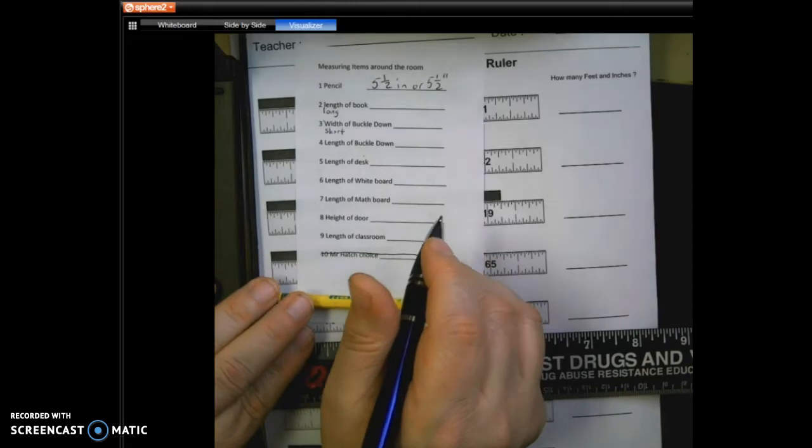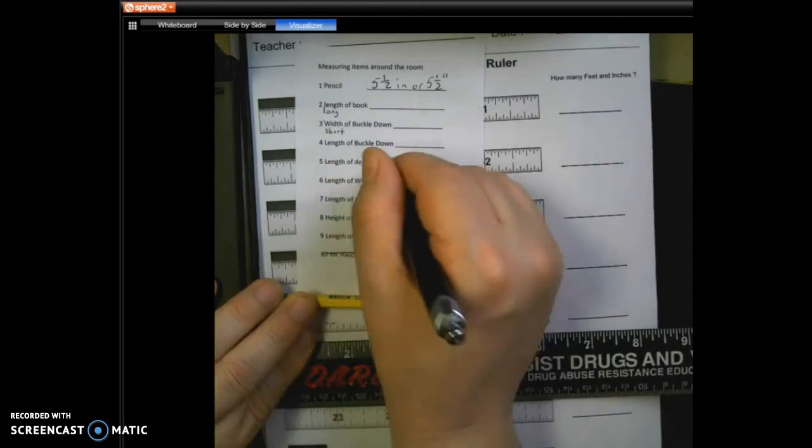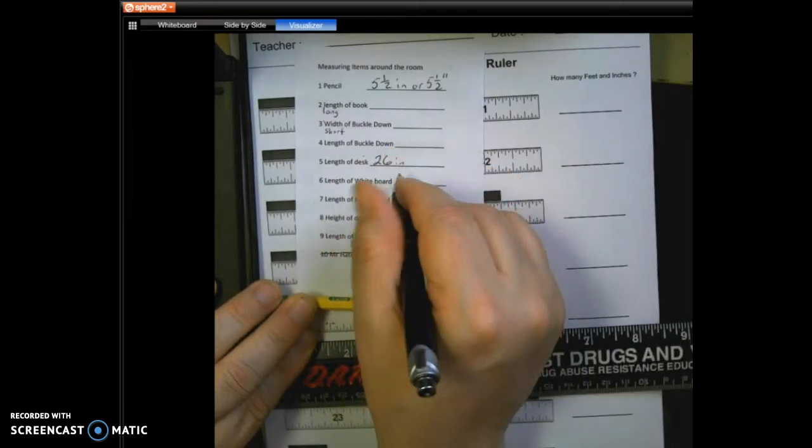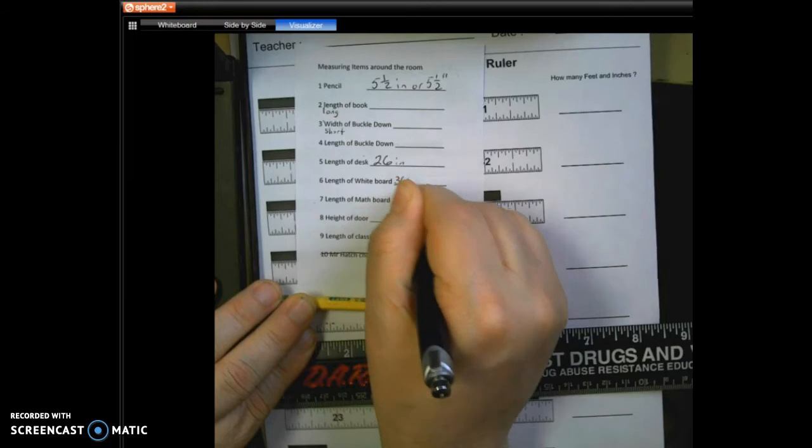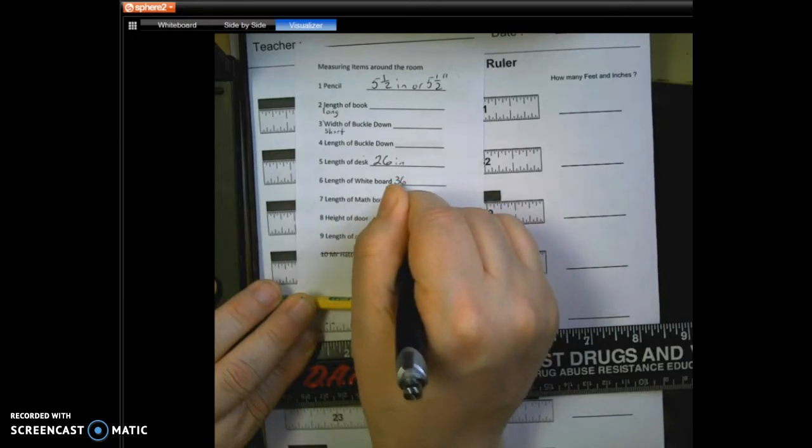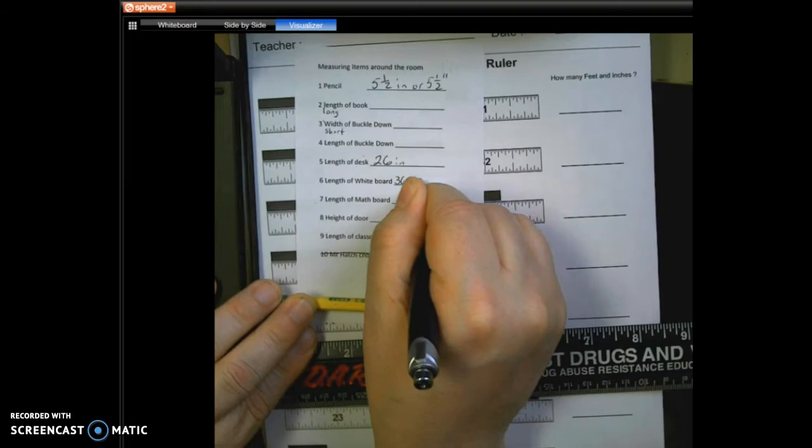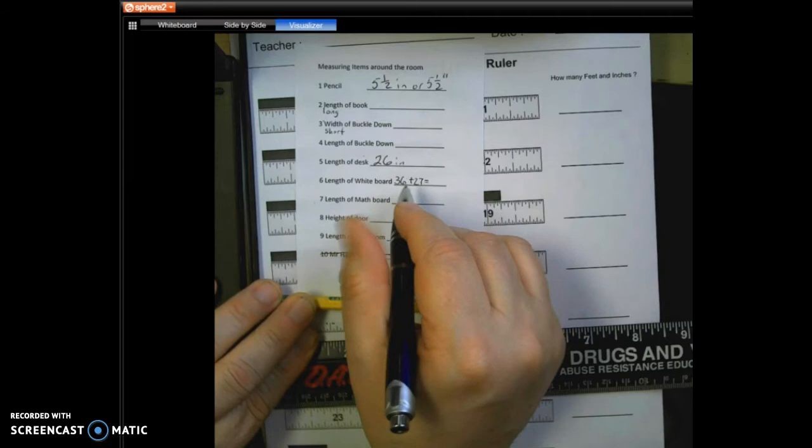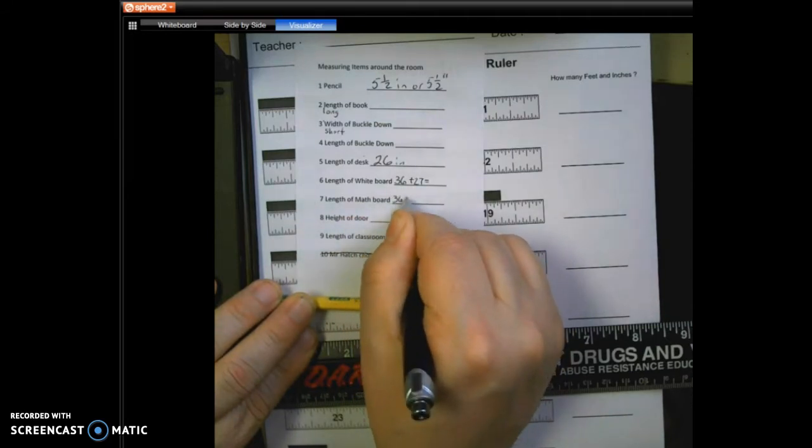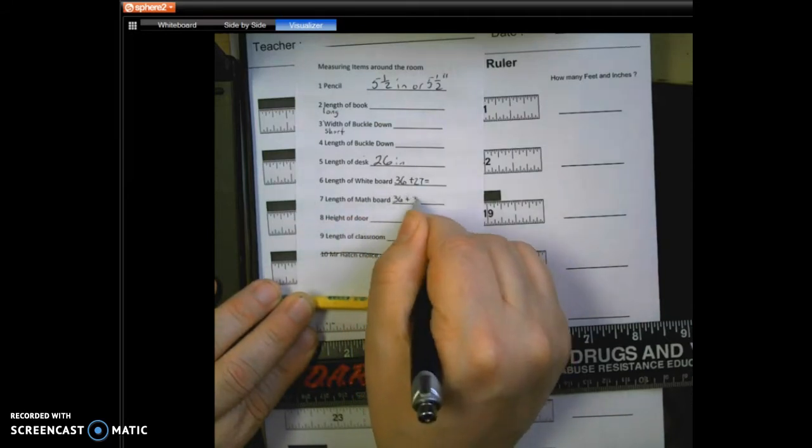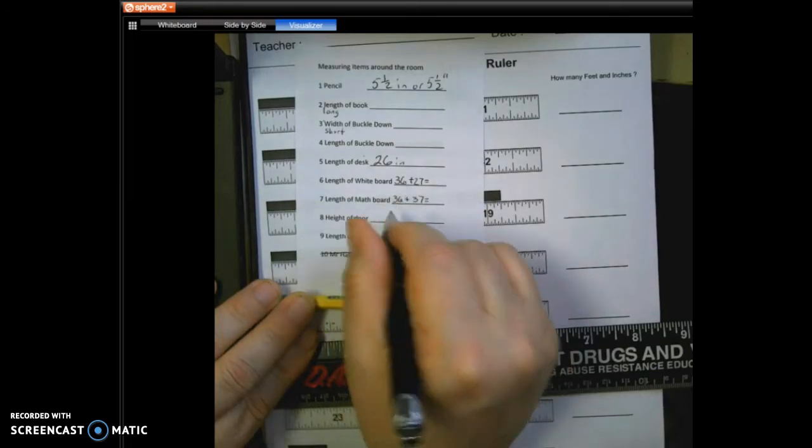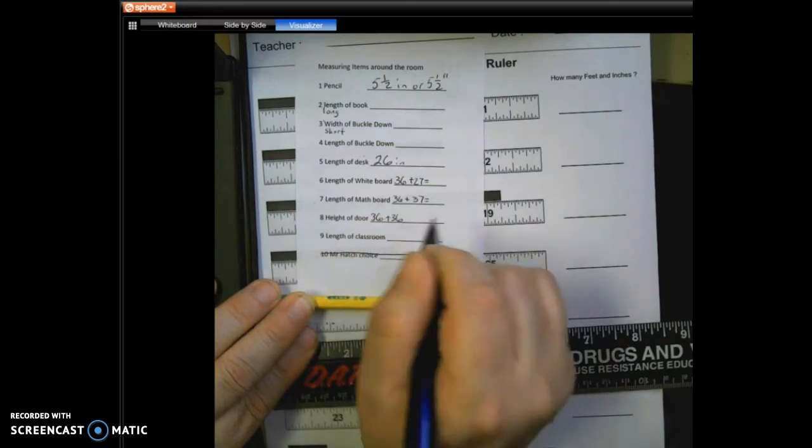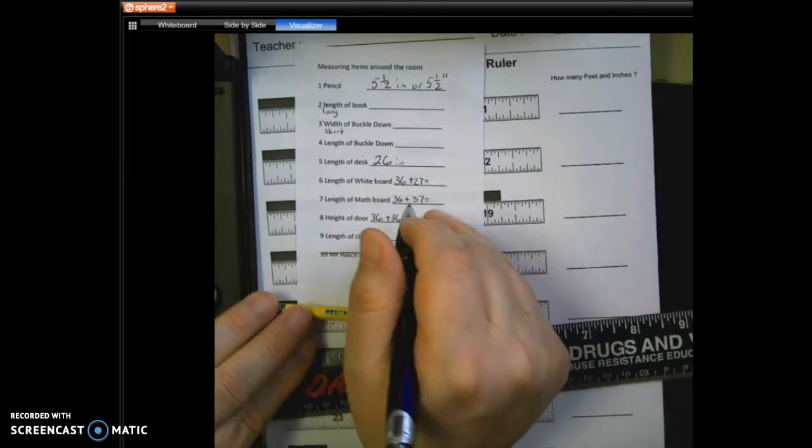So the lesson that we're looking at is that the length of the desk was 26 inches. The whiteboard was 36, so a yardstick, three feet, plus 27 more inches. We'll come back to that. The math board was 36 plus 37 inches. The height of the door was 36 plus 36, and then the length of the classroom we'll work out down here.